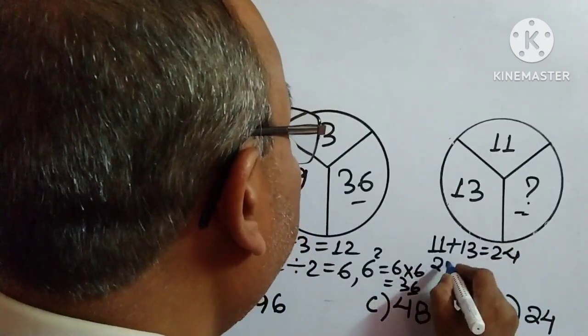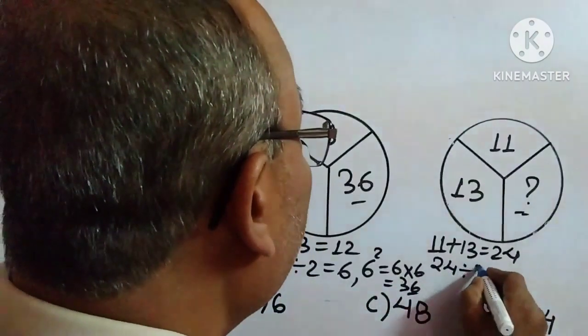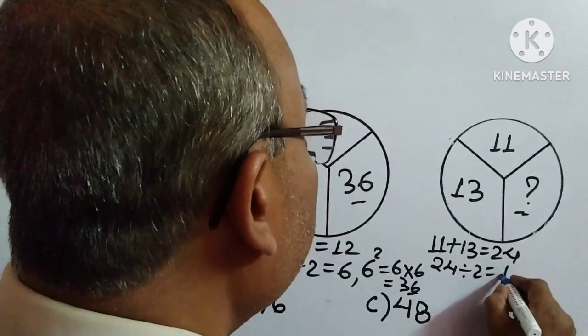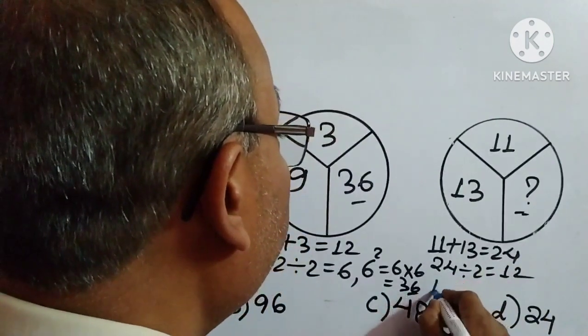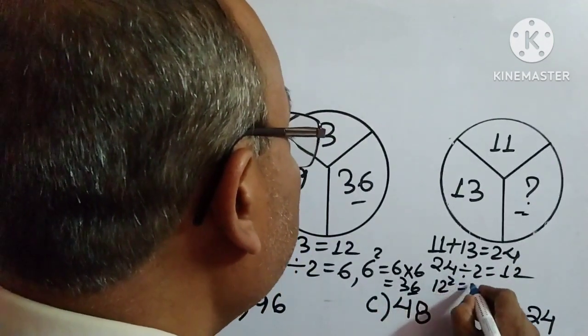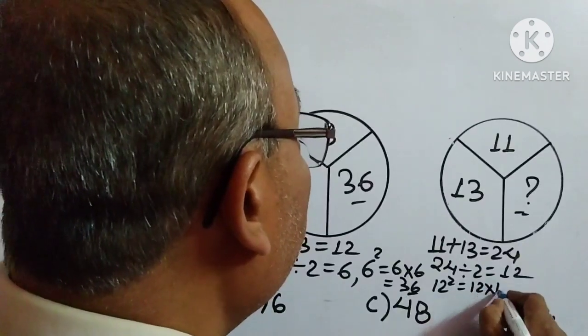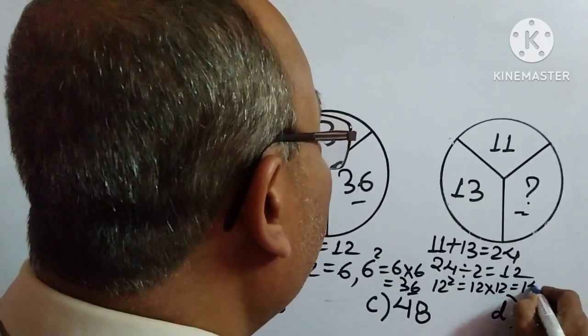Now we have to divide 24 by 2. So what is the result? 12. Now we have to square it. So 12 squared, 12 into 12 is equal to 144. So this is the answer.